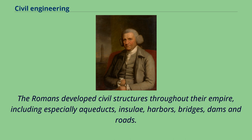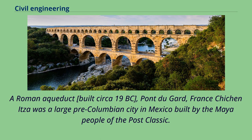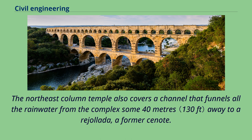The Romans developed civil structures throughout their empire, including especially aqueducts, insulae, harbors, bridges, dams and roads. A Roman aqueduct, built circa 19 BC, Pont du Gard, France. Chichen Itza was a large pre-Columbian city in Mexico built by the Maya people of the post-classic period. The northeast column temple also covers a channel that funnels all the rainwater from the complex some 40 meters away to a rejollada, a former cenote.